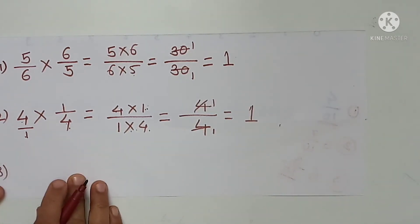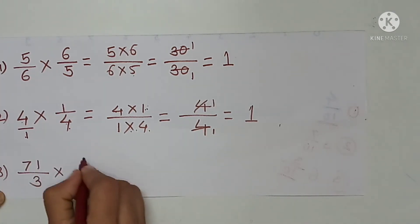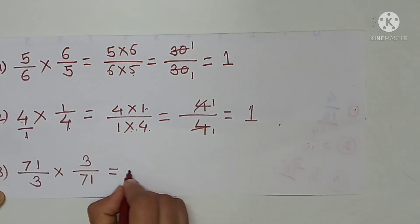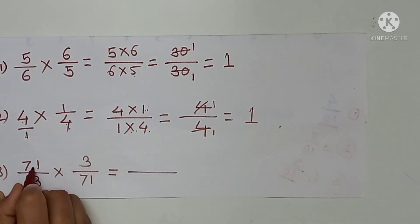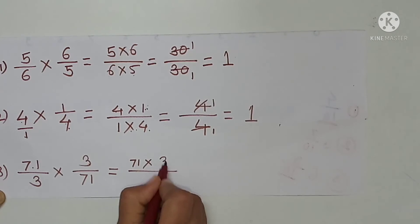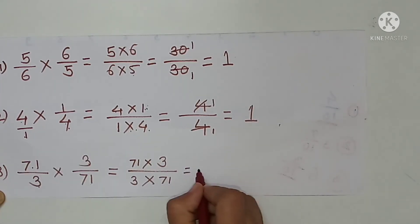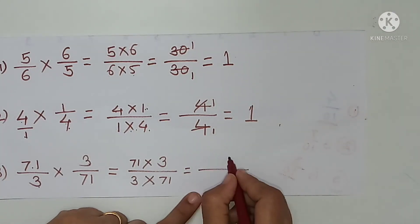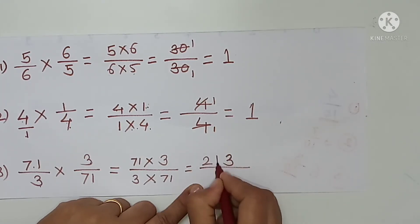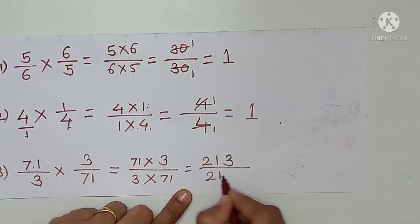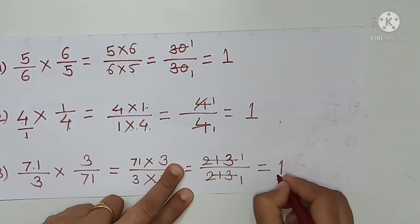Third example: 71 upon 3 multiplied by 3 upon 71. Multiplying: 71 multiplied by 3 in the numerator, and 3 multiplied by 71 in the denominator. We get 213 upon 213, which equals 1.